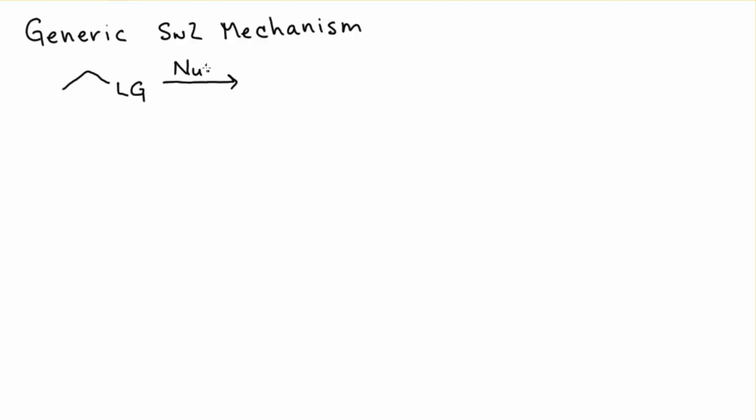So the leaving group cannot just leave as it does in an SN1 mechanism, because if the leaving group were just to leave we would be left with a primary carbocation. Primary carbocations are very high in energy and they don't really occur because of how high in energy they are. So we're not just going to have the leaving group leave as it does in an SN1.